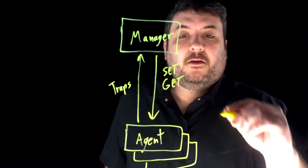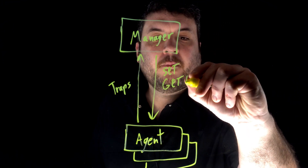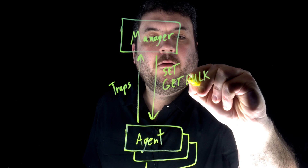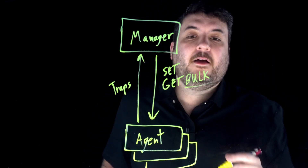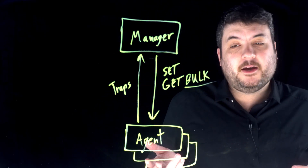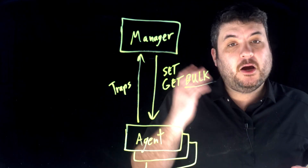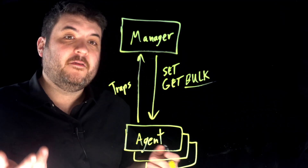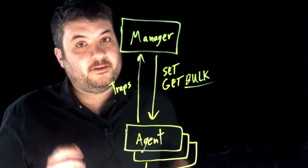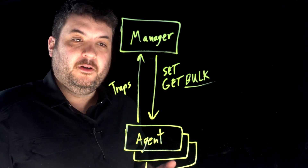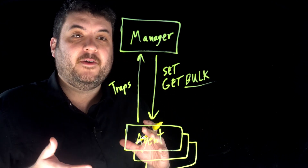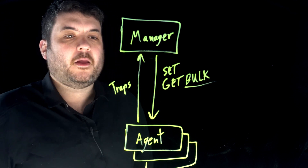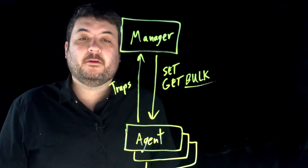Get bulk will declare an entire range of values and say, give me all of those. Then going back up will be a response to that get bulk containing all the values in one message. It's just a different way to encapsulate a variety of values into one message, and that's the advantage of SNMP get bulk.